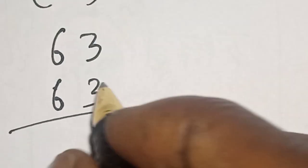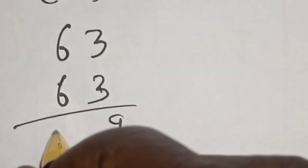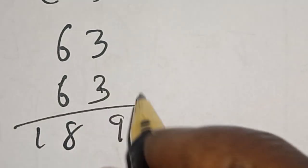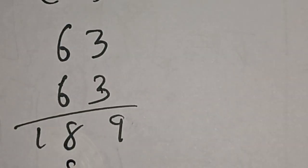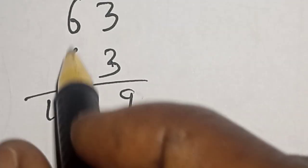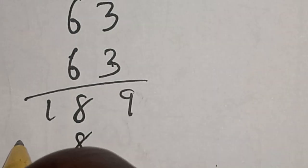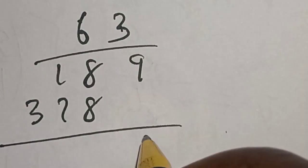Then this is 3 times 3, 9. 3 times 6, this is 18. Then this is 3 times 6, 18. 8 remain 1. Then 6 and 6, 36 plus 1, this is 37. So we have, let's sum it together.